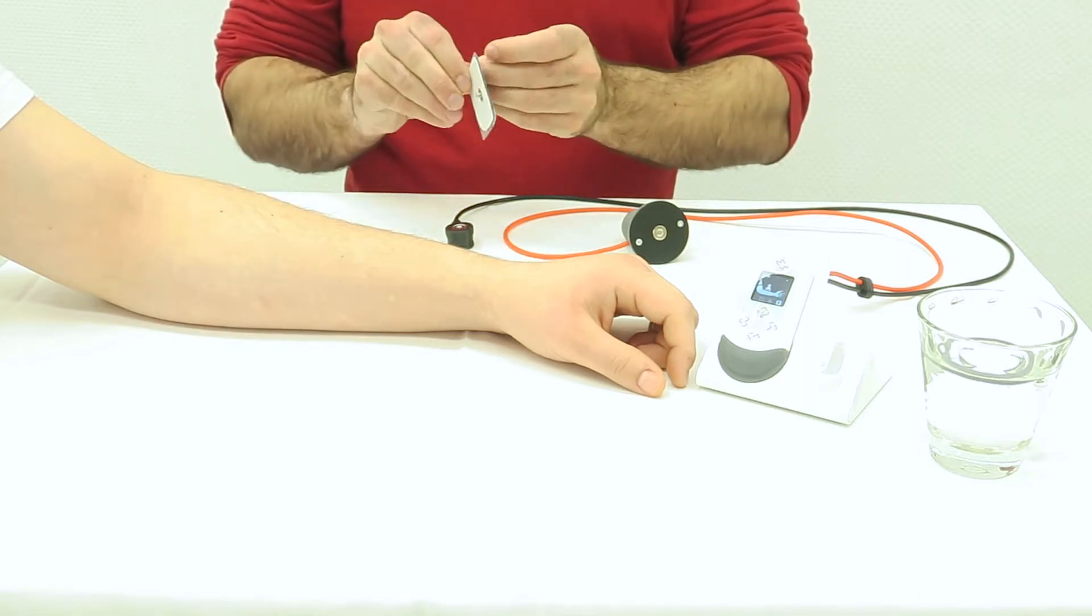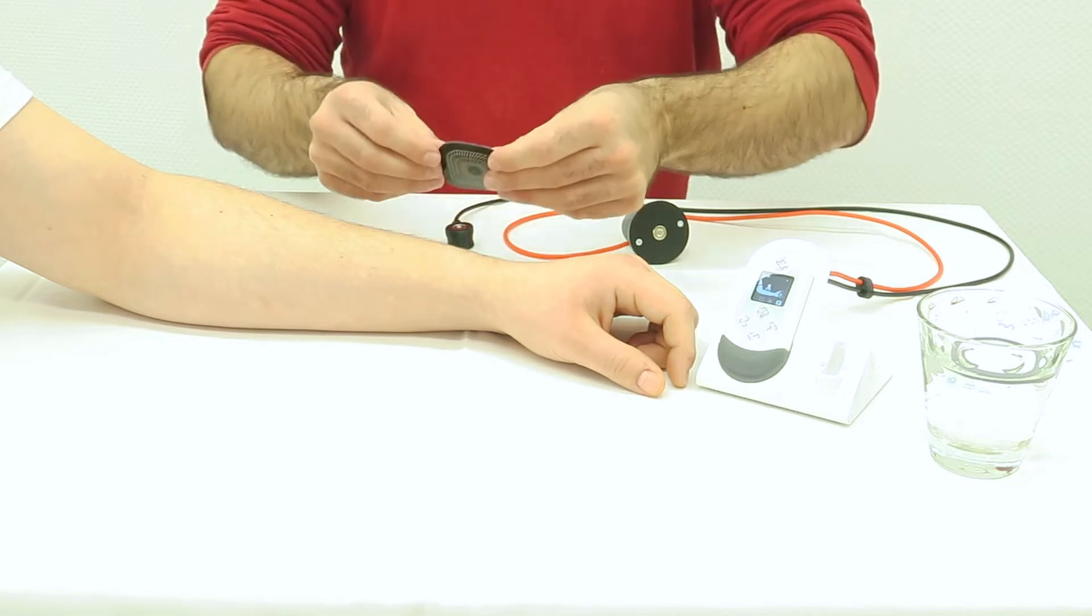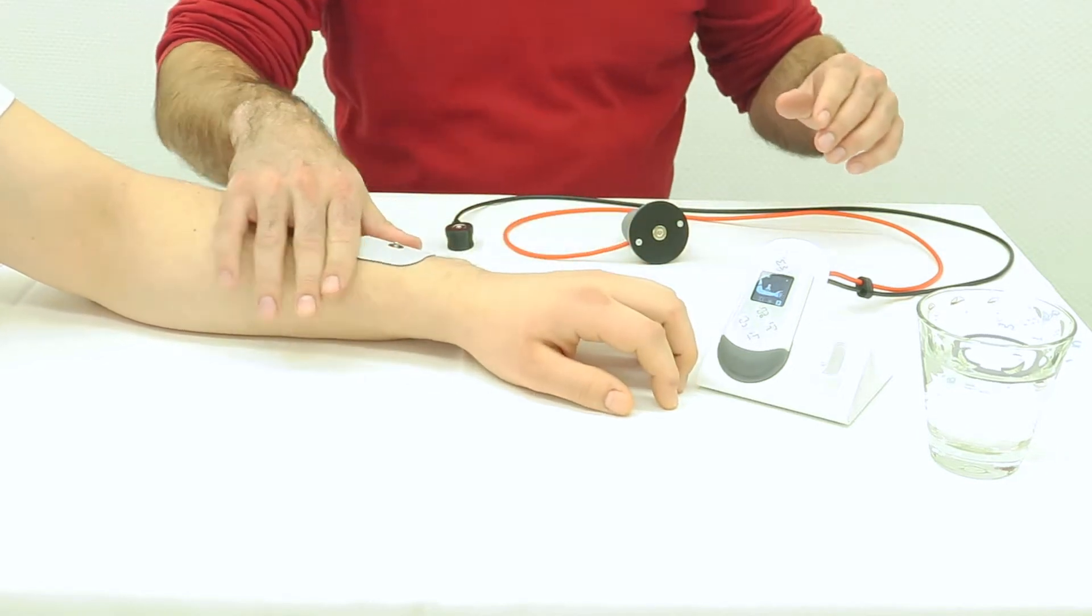While waiting for the cotton electrode to be wetted, place the gel electrode onto the back of the user's forearm, near the bony part of the wrist.